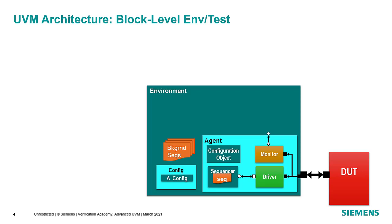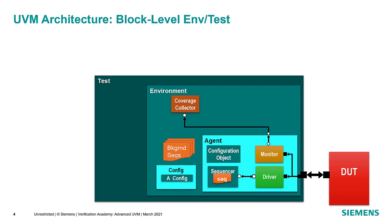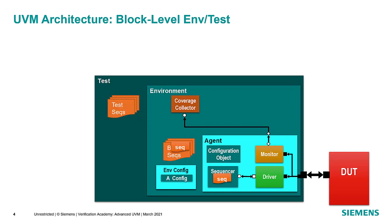Block-level environments also typically include a coverage collector to record transactions reported by the monitor. The environment is instantiated by the test component, whose job is to instantiate and configure the environment and specify which sequences to run on the agent sequencer. The test can also use the UVM factory to modify coverage collector or other component types, since the coverage being collected is often tied closely to the stimulus being generated.